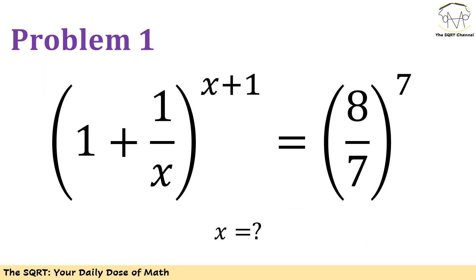In problem number 1, we have (1 + 1/x)^(x+1) equals (8/7)^7. We are going to find x. Let's see how we can solve this problem.